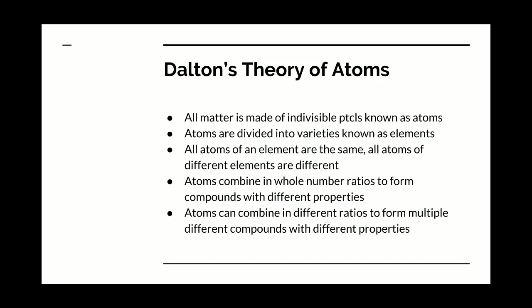Now, Dalton didn't get it entirely correct. We've since updated his theory to include some corrections. First off, we know that atoms are divisible. They can be subdivided into subatomic particles. We now know those as protons, neutrons, and electrons. How those were discovered and incorporated into atomic theory, we'll get to that in a bit. Atoms are divided into varieties known as elements, and we now know how atoms of an element are all the same and how different elements are different. The atoms of an element all have the same number of protons.